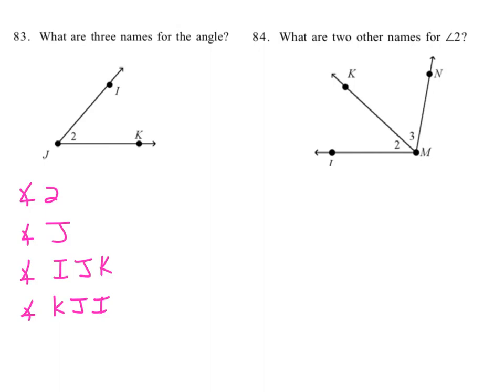What are two other names for angle 2? We can't use the 2 because they already named it for question 84, and we can't say angle M. Hopefully you understand why we can't do that—because there's multiple angles coming off of M, so we have to name it with three points.